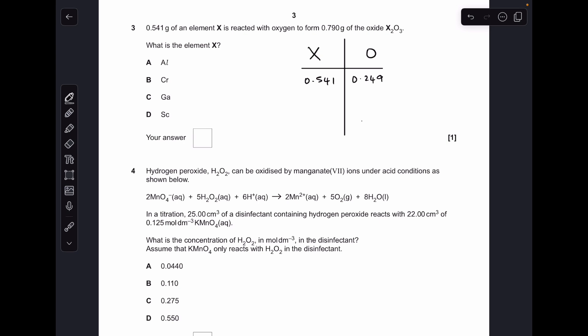Moving on to number three. This is a reverse empirical formula question. We've got the mass of X and we're told it makes 0.79 grams of oxide. The difference between those two numbers is the oxygen that's gone in. We divide by the MR of oxygen which is 16, giving us 0.0156 moles of O. Then we apply the ratio. To get the moles of X we multiply by 2 over 3, giving 0.0104. Then to get the MR of X, mass of X over moles of X gives 52.1, which is chromium. Option B.